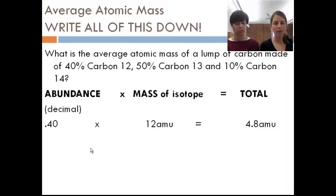So over here on the left, we've got 0.40. So I've taken the 40% from the problem and converted it into a decimal. So 40% is 0.40. I have the mass of that isotope, which is 12 amu. I have 40% of carbon 12, and I multiply those together to get 4.8 amu. So this is the amount of mass that carbon 12 contributes to the overall mass of our compound, or of our element, excuse me.